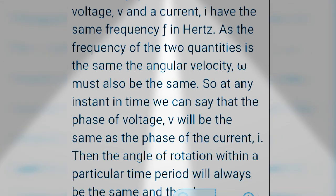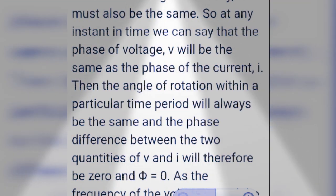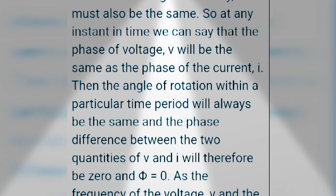So at any instant in time, we can say that the phase of the voltage will be the same as the phase of the current. Then the angle of rotation within a particular time period will always be the same and in phase.